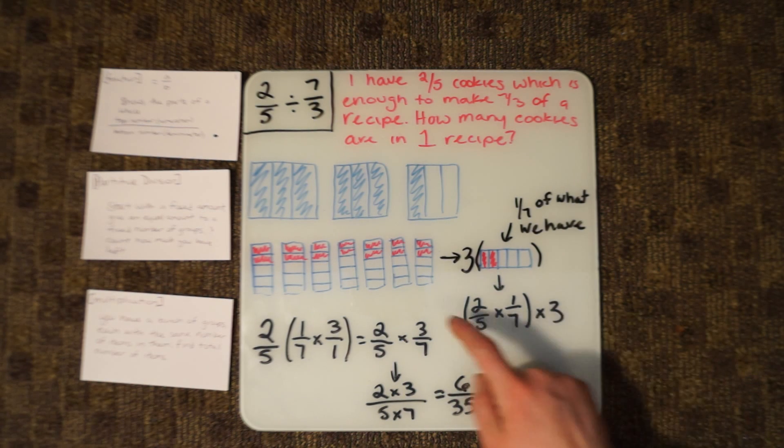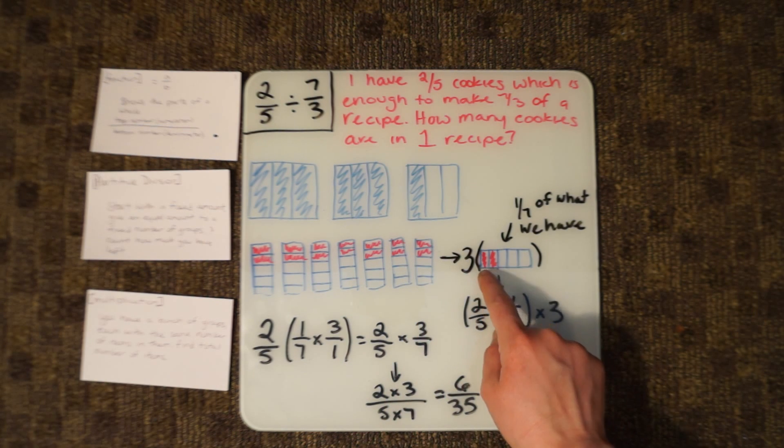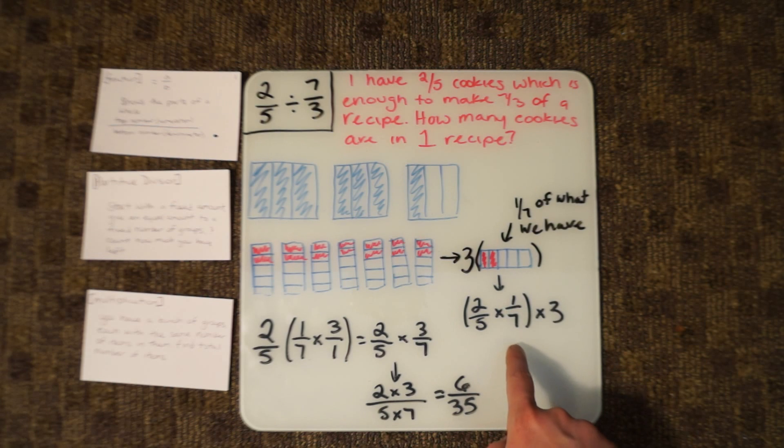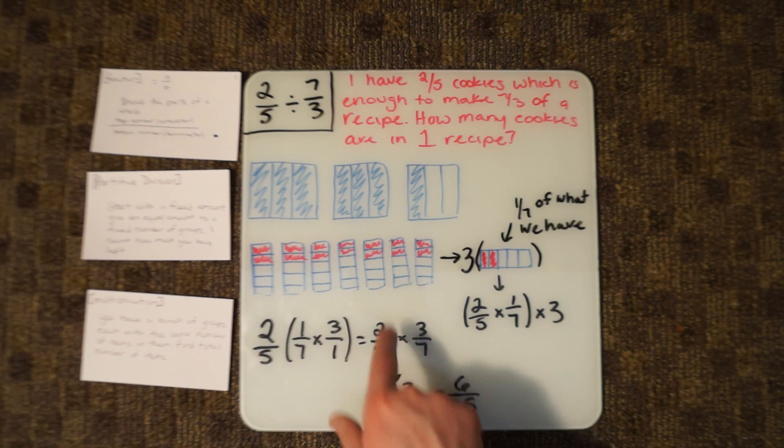Now if we turn this into an equation, it would be 2/5 times 1/7 because this is 1 of the 7 parts.